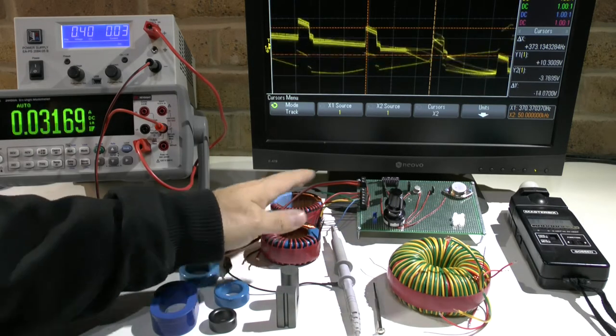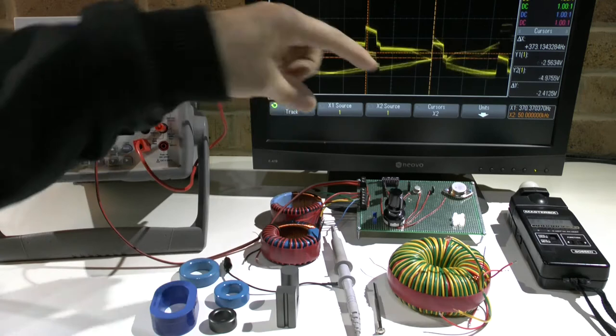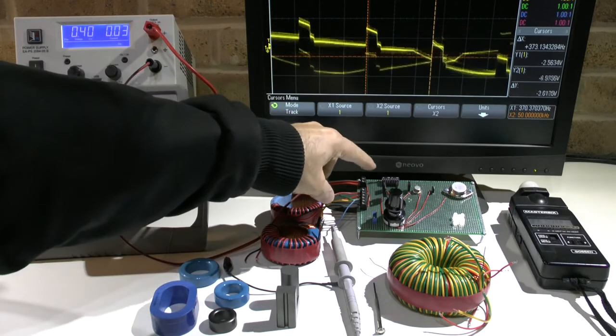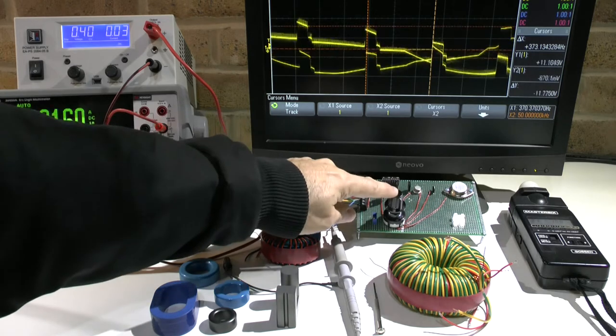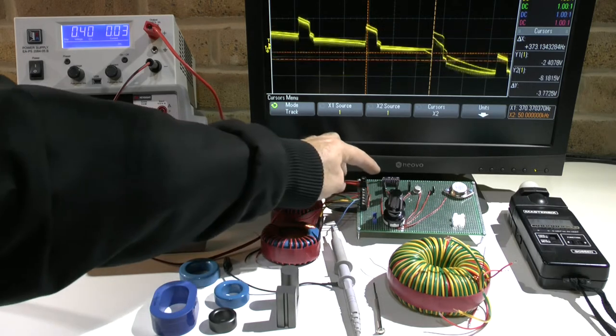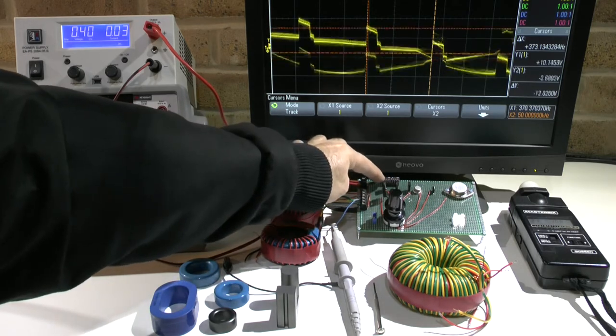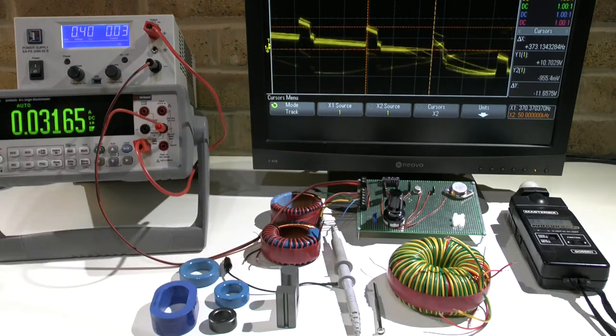So I got to test these three coils with seven or a couple of more transistors. I can switch the transistors over here. I have the possibility to switch each transistor on. They have their own circuitry.